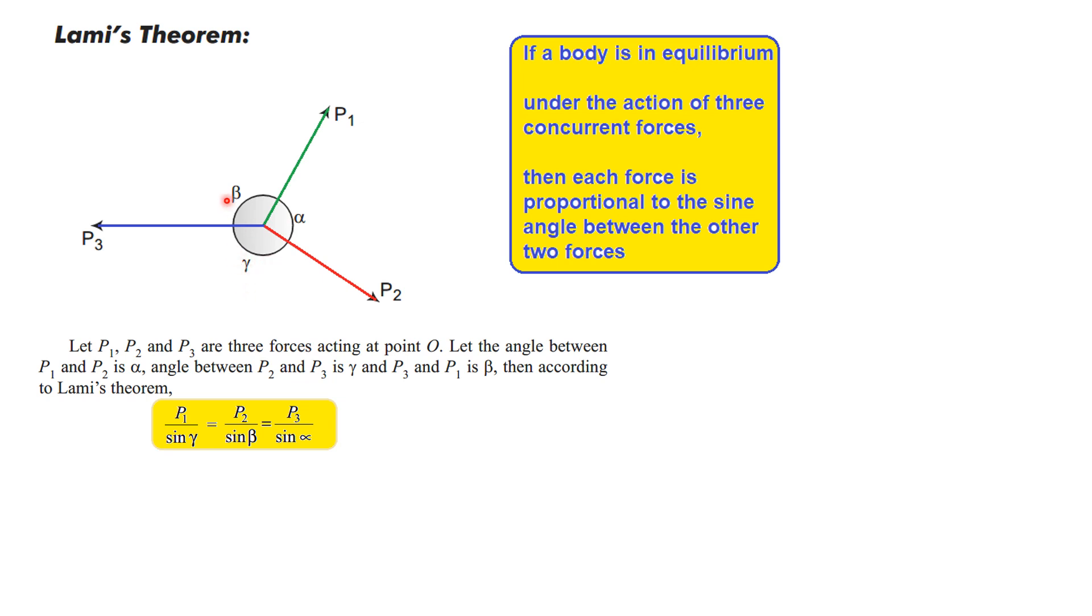P3 is gamma and P3 and P1 is beta. Then according to Lami's theorem, P1 divided by sine alpha will be equal to P2 divided by sine beta and equal to P3 divided by sine gamma.